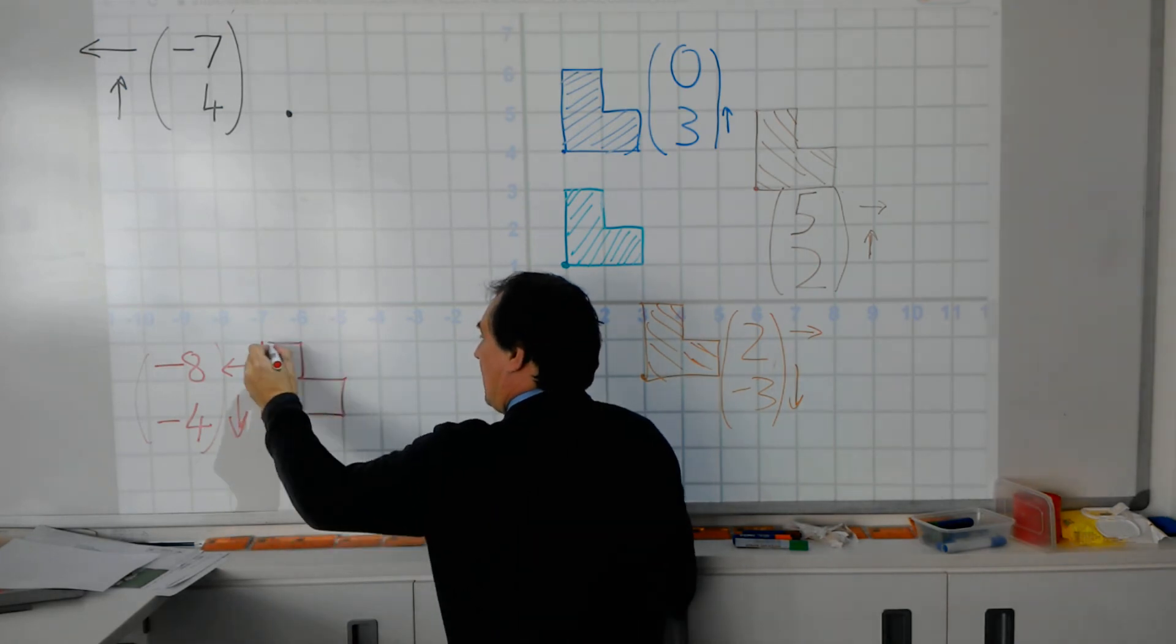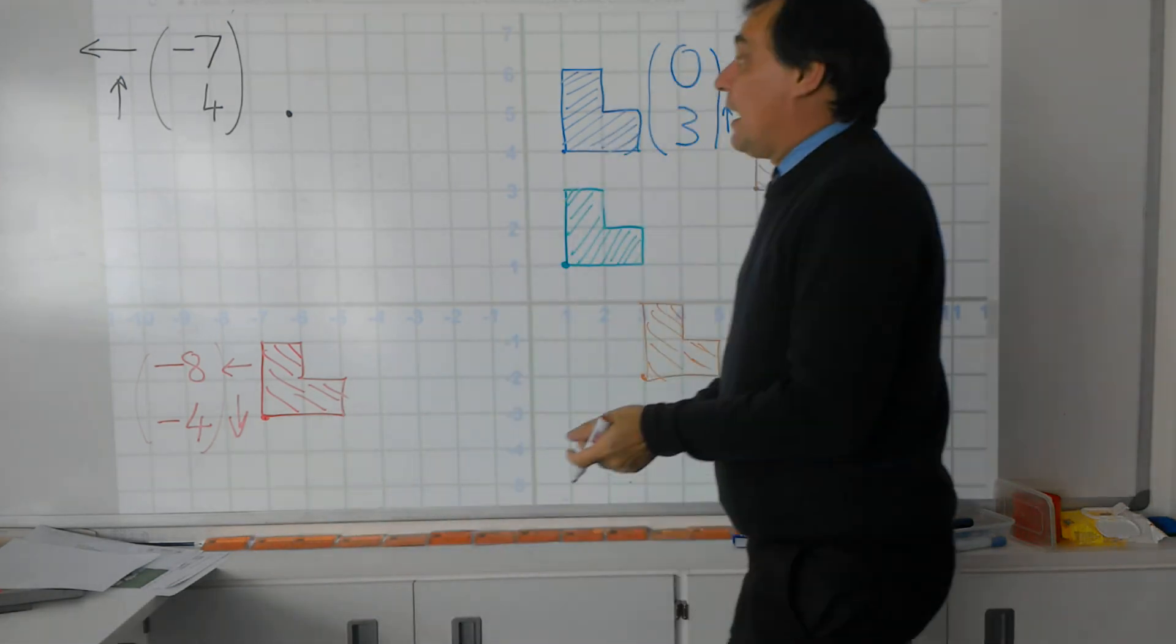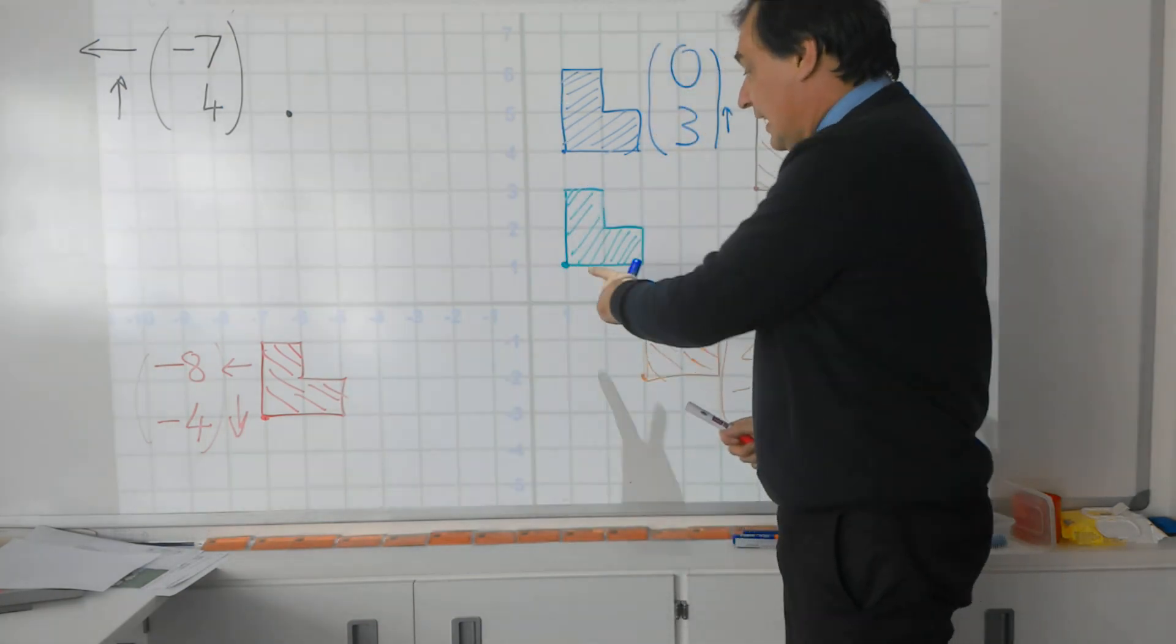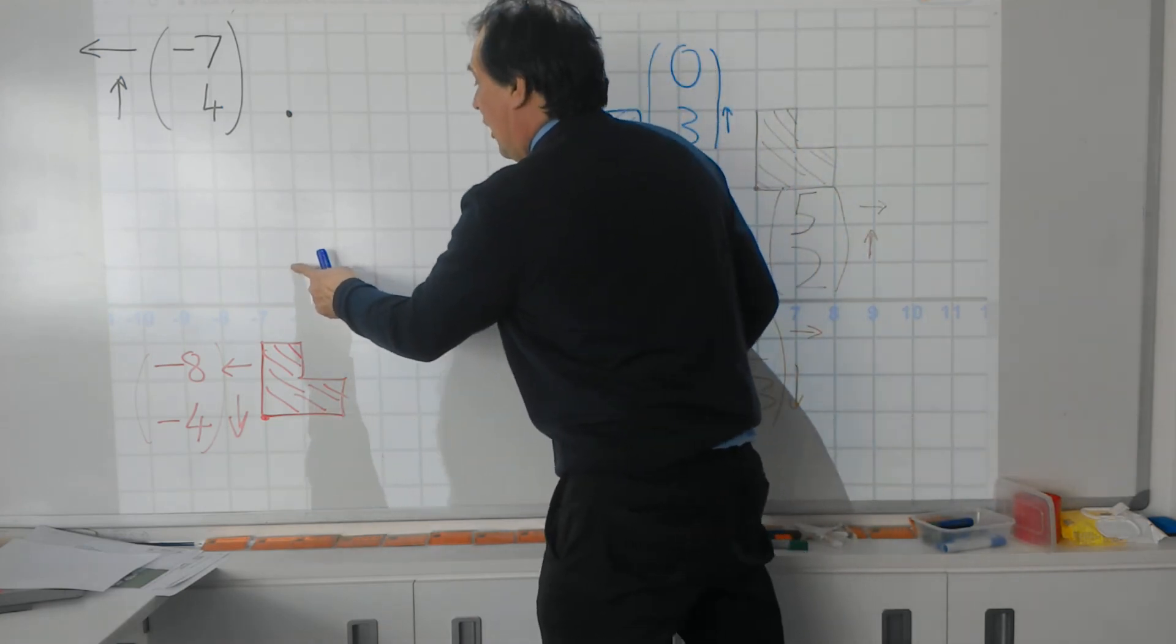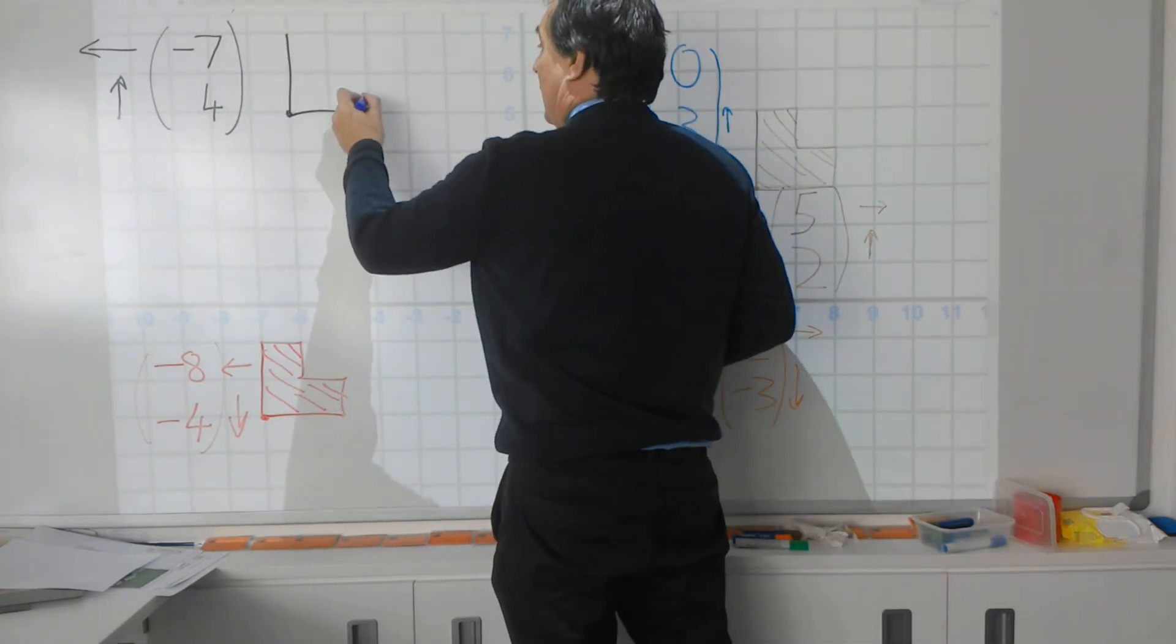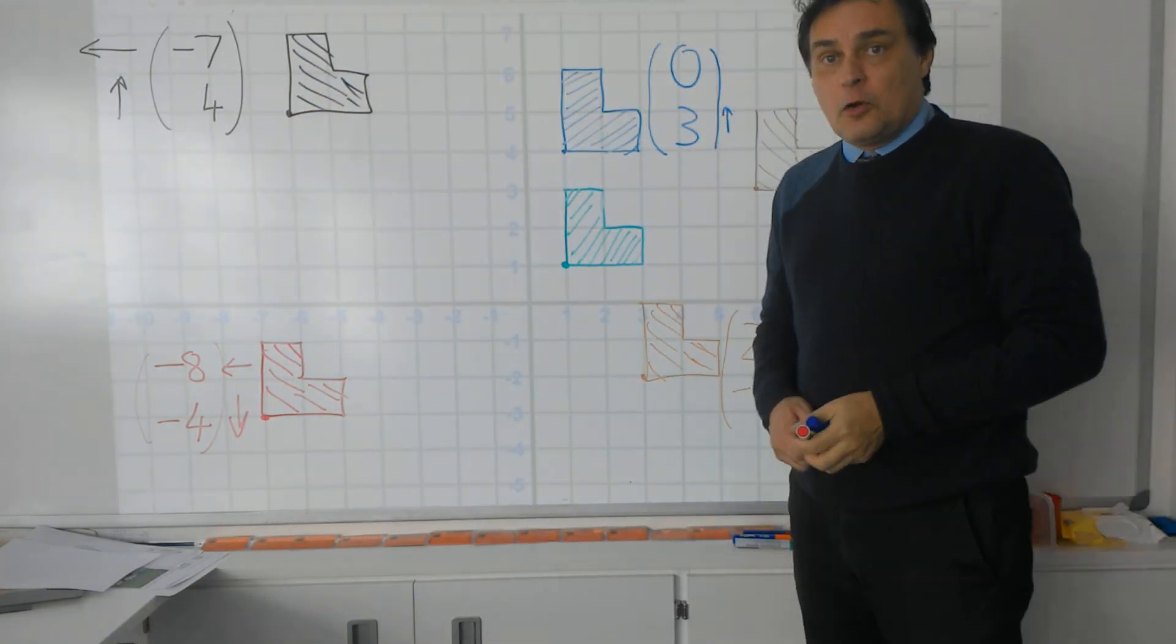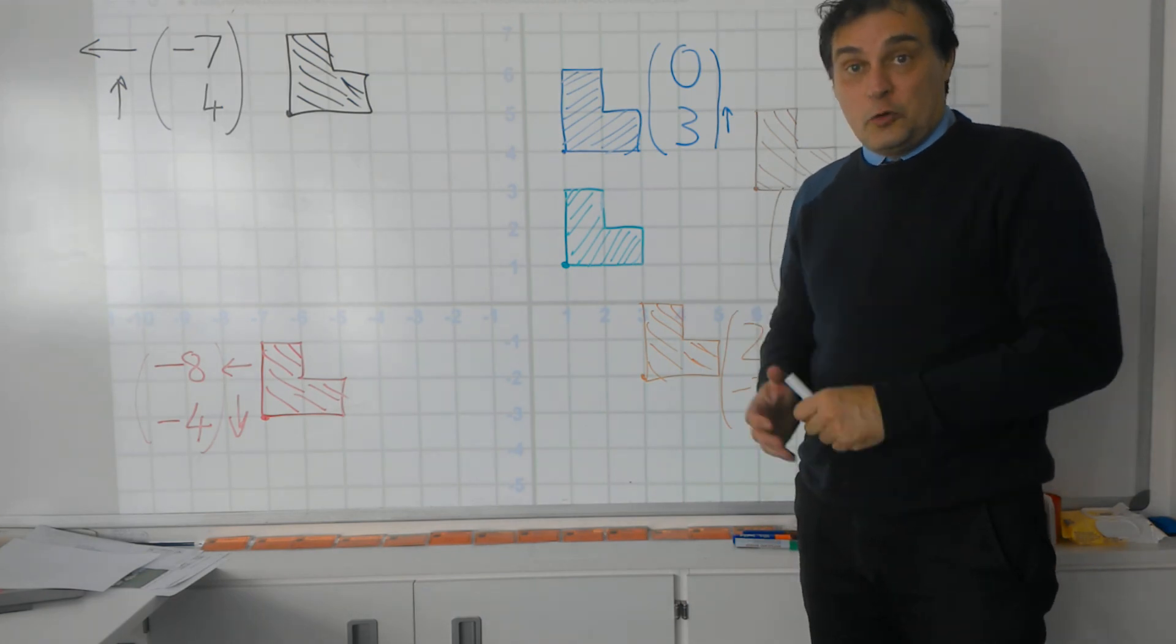And let's have a look at the final one, which is the black one in the top corner there. That is minus 7, so along towards the window again, and this time up 4. Counting again from my green corner: 1, 2, 3, 4, 5, 6, 7, 1, 2, 3, 4, and my L shape, black colored L shape, goes there. So that is how we perform translations with a two number vector.